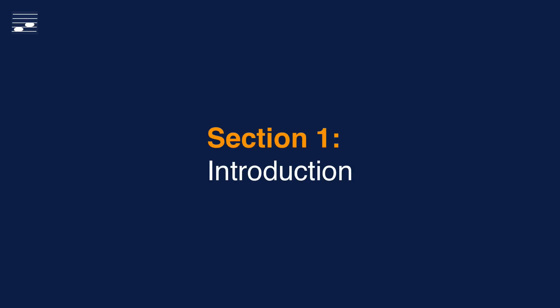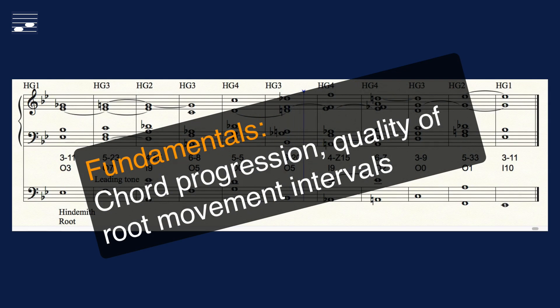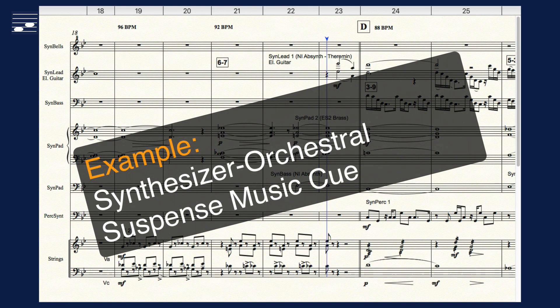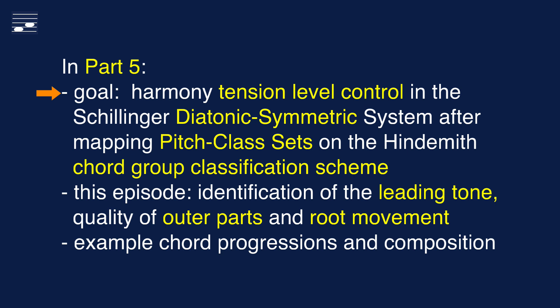This tutorial is intended to conclude the series. We'll see some more chord progression examples and the synthesizer orchestral texture based on a progression with sets and chord tension level control. What I want to bring to you is a practical technique for controlling the tension and dissonance level in a modern style chord progression. The approach combines Schillinger Diatonic Symmetric Harmony with the use of Pitch Class Sets after mapping these onto the Hindemith Chord Group classification scheme. In this episode I'll discuss various aspects that were omitted from parts 1 to 4.